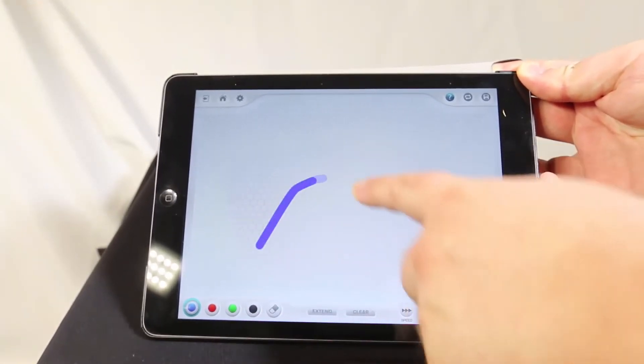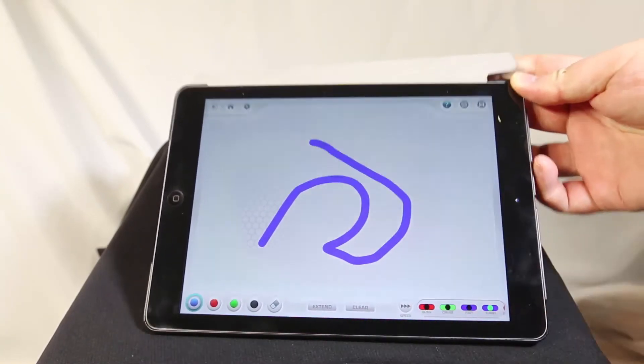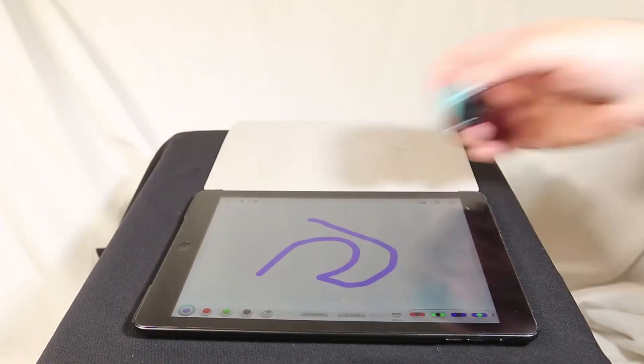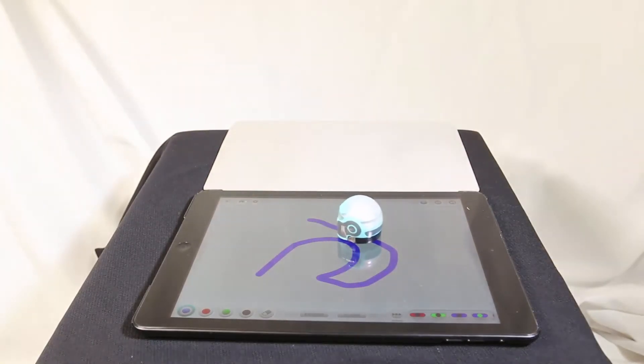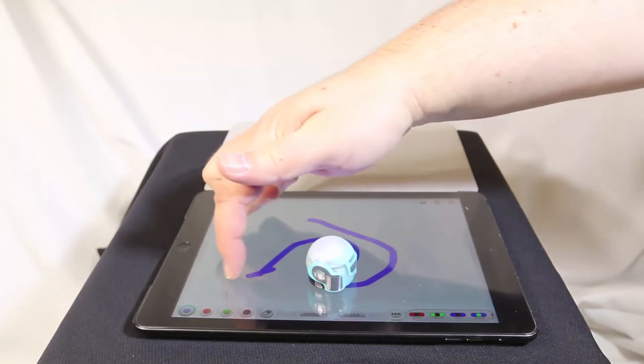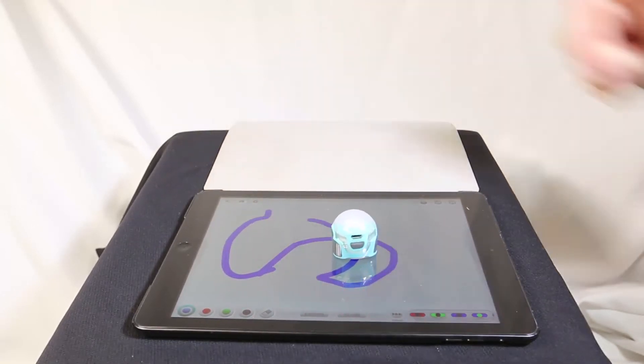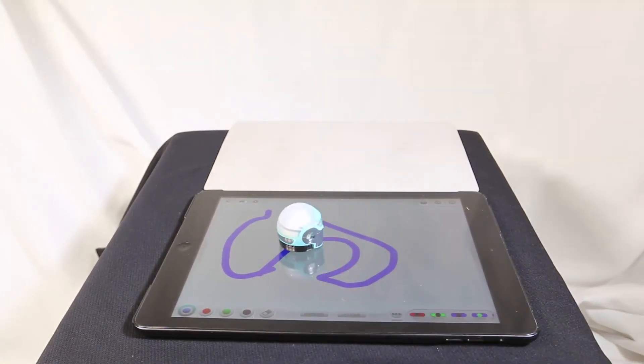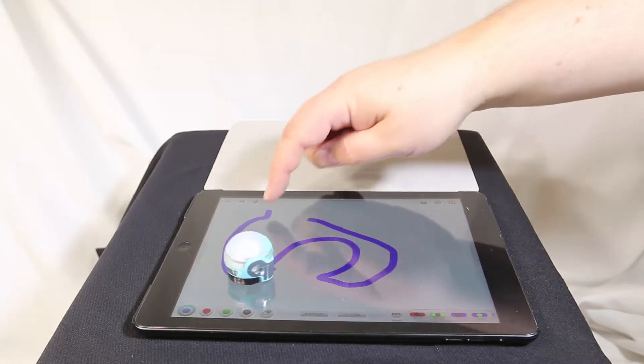You can also use the app to draw on the screen. By putting your Ozobot on there, it will go the way you want it to. It's very fun and interesting—you can program it as you go, and as you're programming it, it will go where you want.